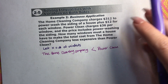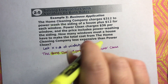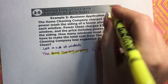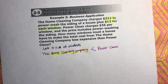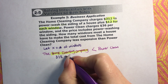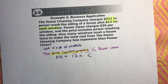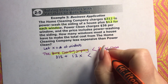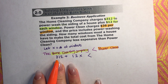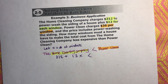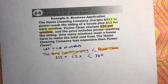Let's figure out the information for the home cleaning company — I'll write that in yellow. The home cleaning company charges $312 to power wash the siding plus $12 for each window, so we write that as 312 plus 12X. That needs to be less than Power Clean, written in orange. Power Clean charges $36 per window, and since the price includes power washing the siding, it's just 36 per window, so it's 36X. That is our inequality: 312 + 12X < 36X.